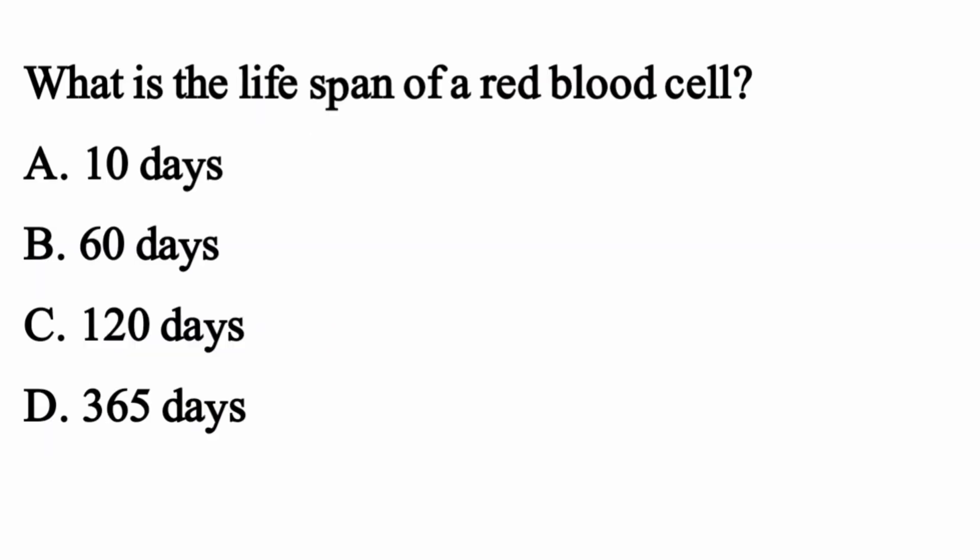What is the lifespan of a red blood cell? The right option is option C: 120 days.